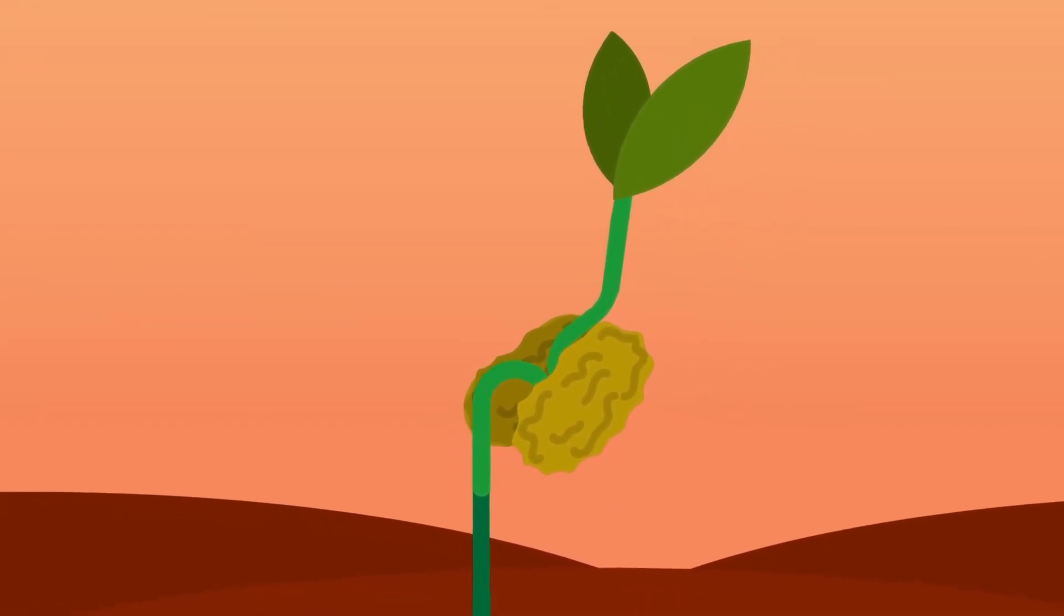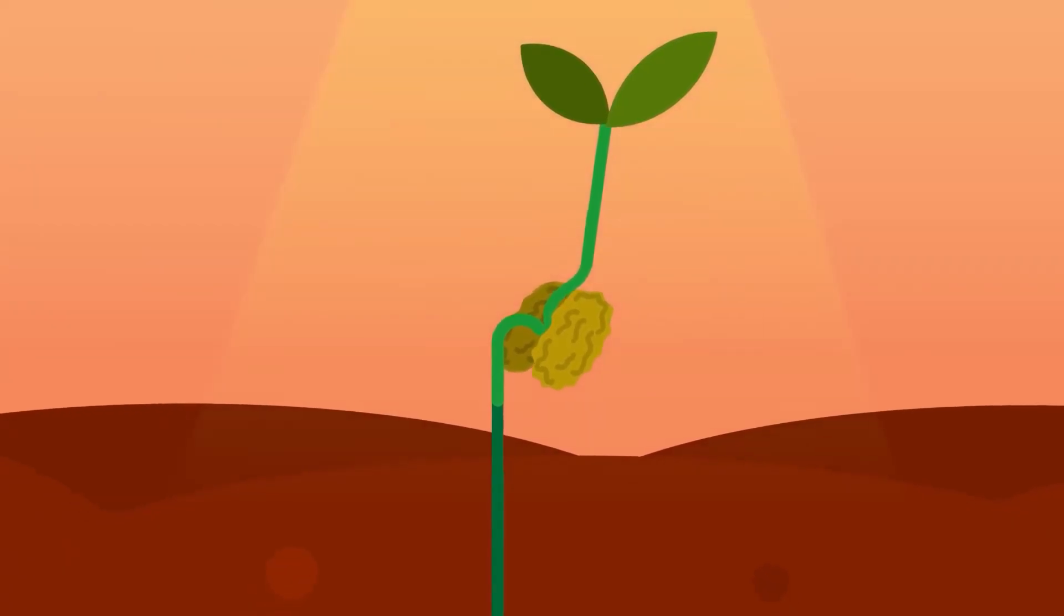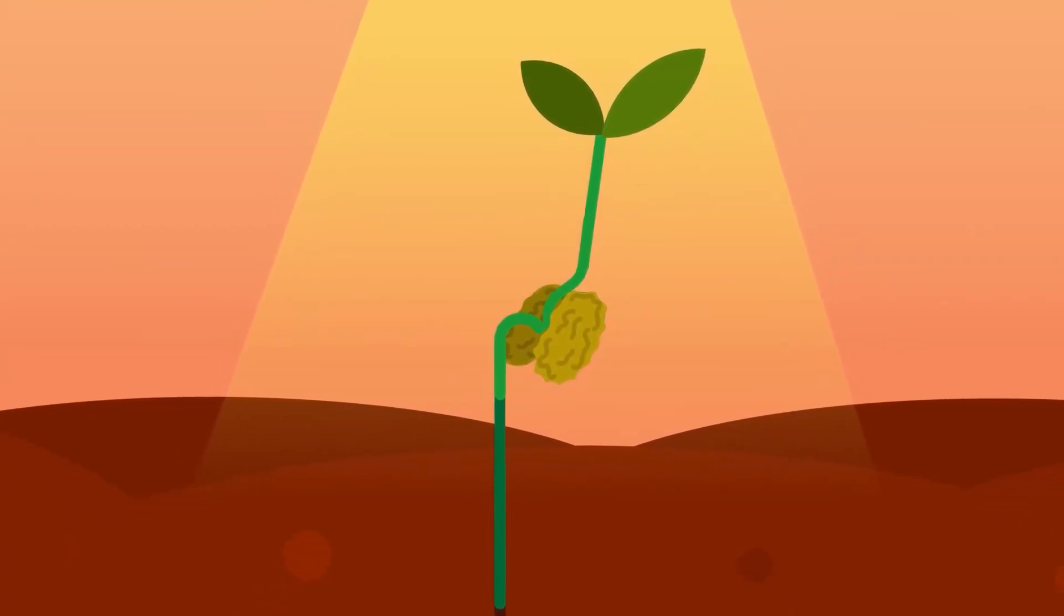The foliage leaves expand, turn green, and carry out photosynthesis. This seedling is now a self-supporting plant.